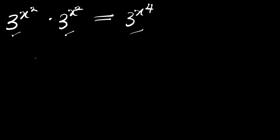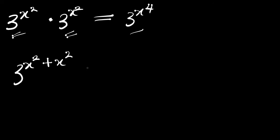What we are going to do is we can simply rewrite this as 3 power x squared plus x squared, because the bases are the same and we have a multiplication sign here — we simply add the exponents. And this equals 3 power x to the 4.